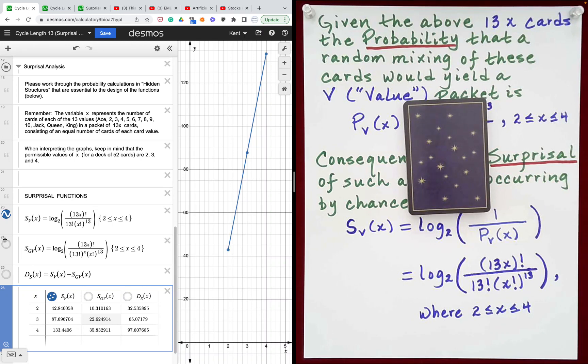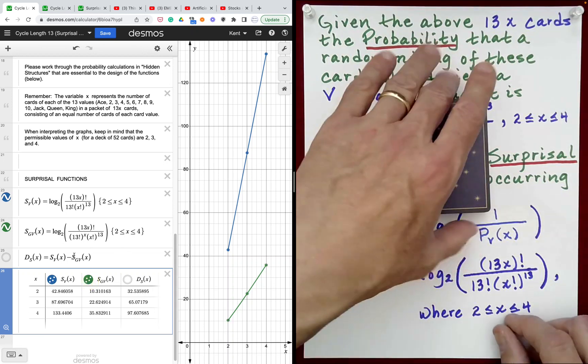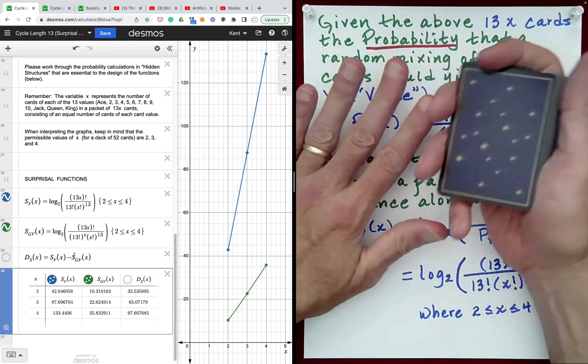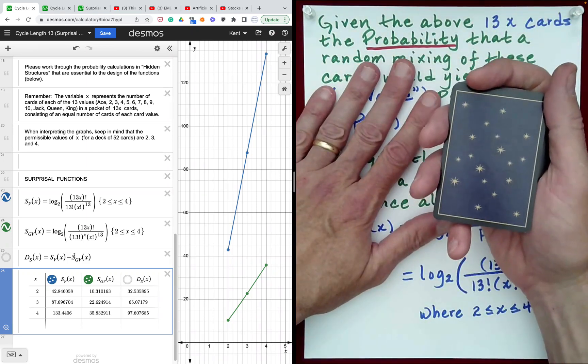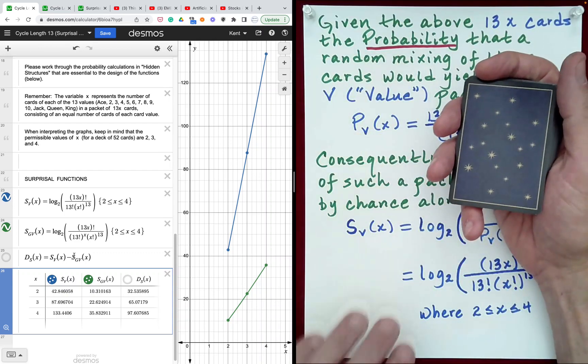It's the second surprisal function, right here. G is for Gilbreth and V is for a packet that perfectly cycles through all 13 values. So once we Gilbreth shuffle the deck that I've set up here, the nature of the resulting structure will have a surprisal value of 35 bits. Let's go ahead and just do a Gilbreth shuffle and then show you that, in fact, we get structure guaranteed by the Gilbreth principle.